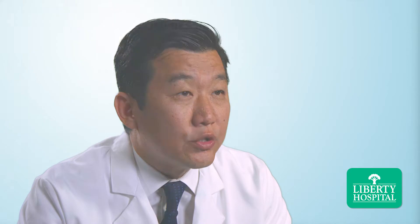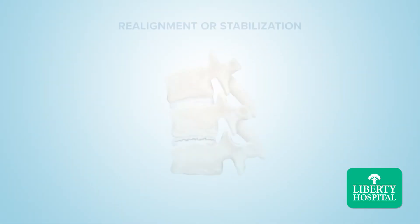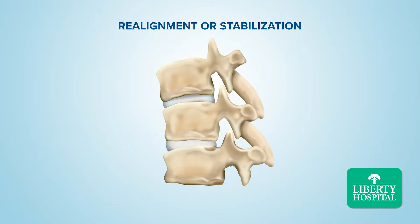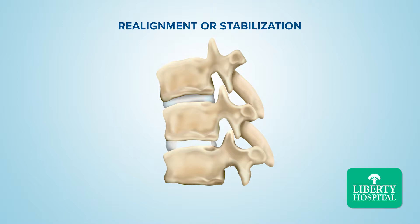A common goal of spinal fusion is decompression of the spine, which may include realignment or stabilization. During the procedure, the surgeon removes the disc material between the vertebrae, and graft material is then inserted between the vertebrae to prompt the two vertebral bodies to fuse into one bone structure.